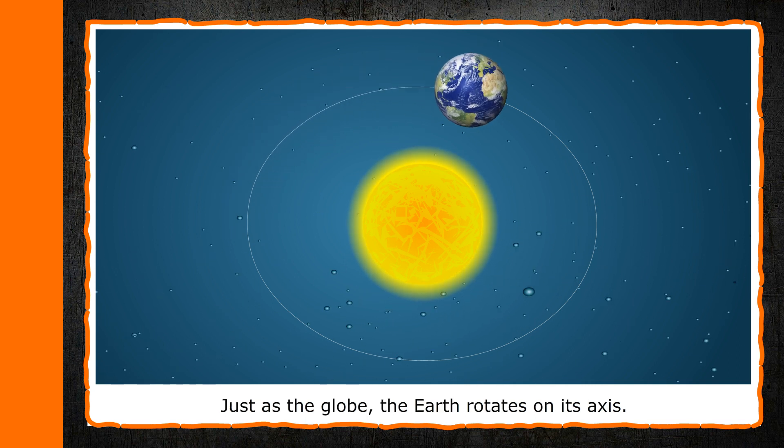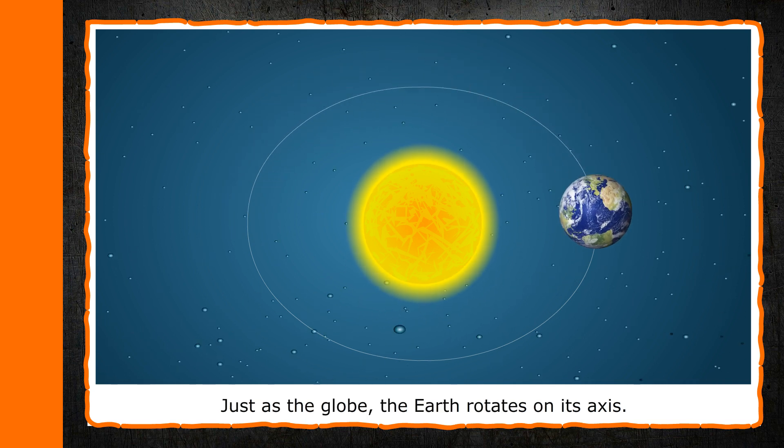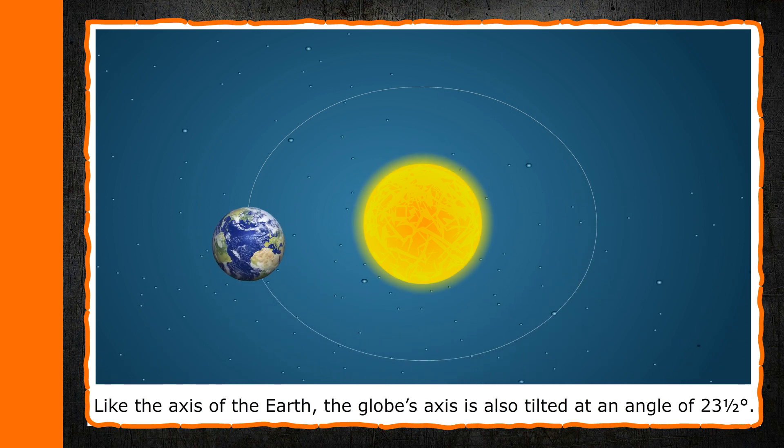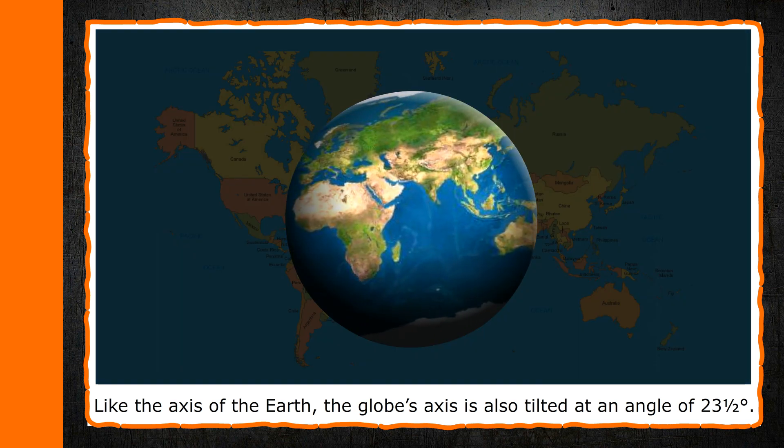Just as the globe, the earth rotates on its axis. Like the axis of the earth, the globe's axis is also tilted at an angle of 23.5 degrees.